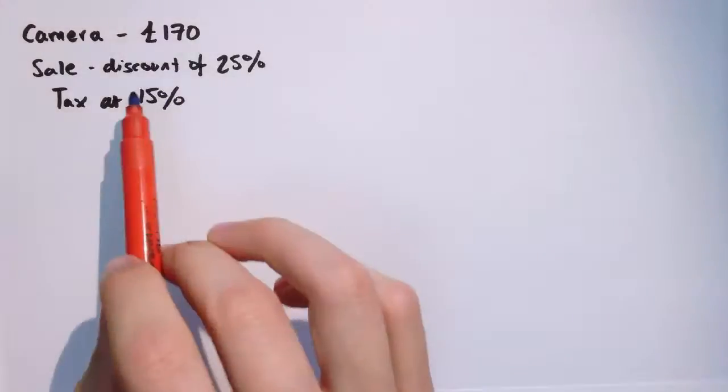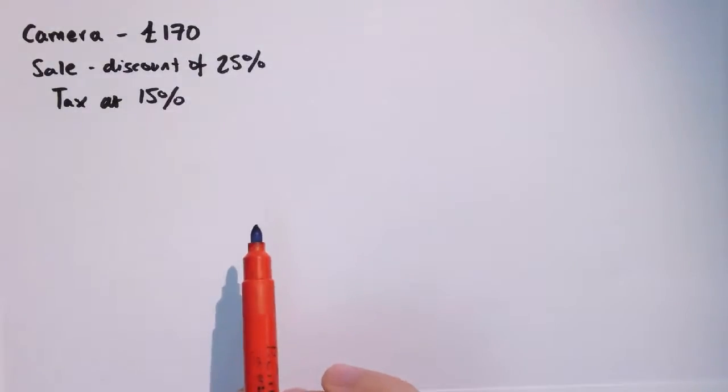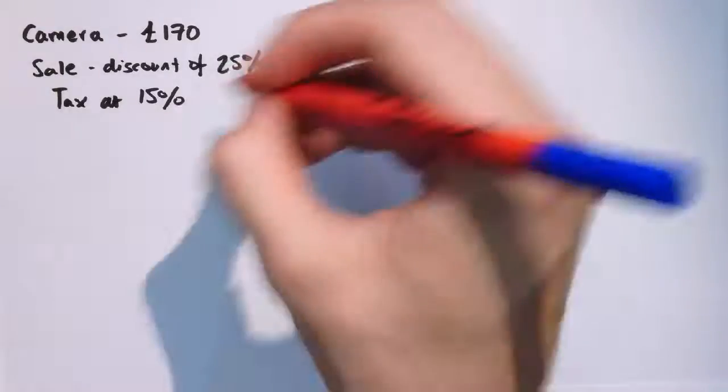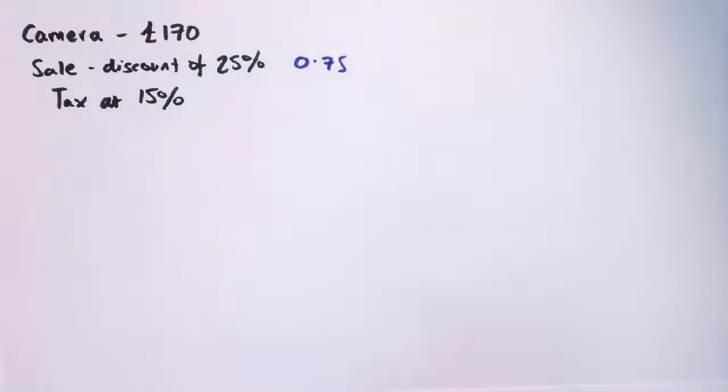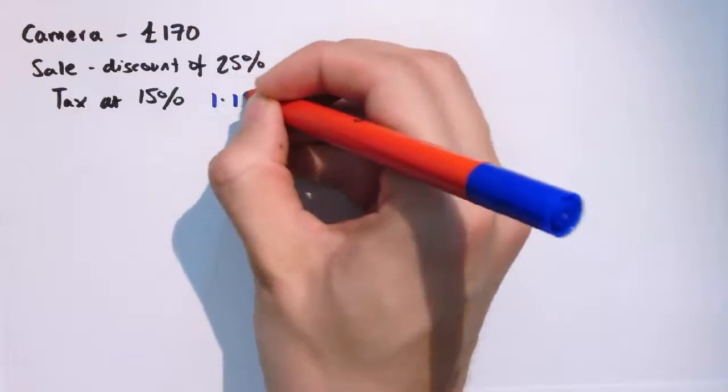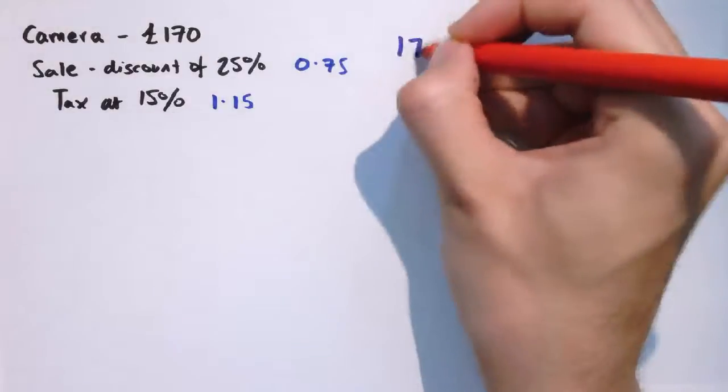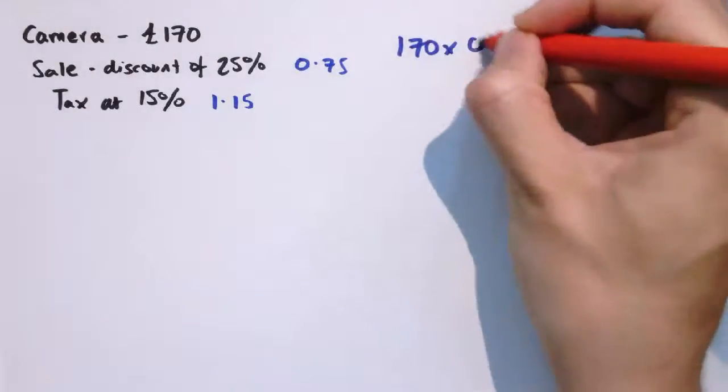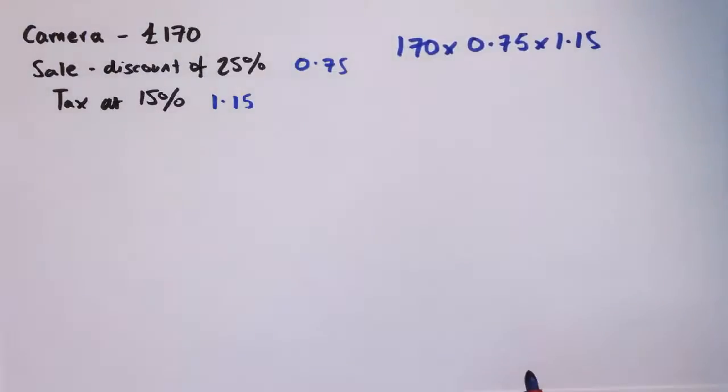For example, here I've got a camera that costs £170. Maybe I've given someone a discount of 25% in a sale, but I've still got to apply tax on that item of 15%. So the discount of 25% would correspond to a scale factor of 0.75, and the tax at 15% would be adding on 15% to the cost, so that would correspond to a scale factor of 1.15.